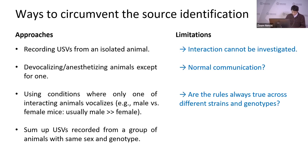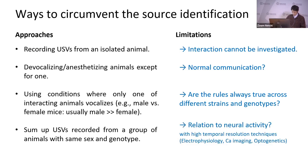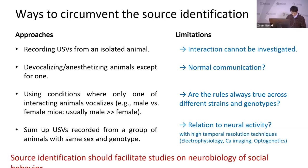Another approach is summing up USVs from a group of individuals with the same property. But when we want to study dynamic aspects such as correlation with neural activity, summing up may not work. So the source identification difficulty is actually a bottleneck for some studies, and if it becomes easy, source identification should greatly facilitate studies on neurobiology of social behavior.